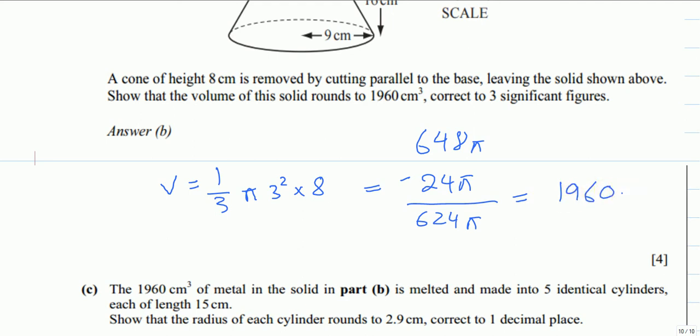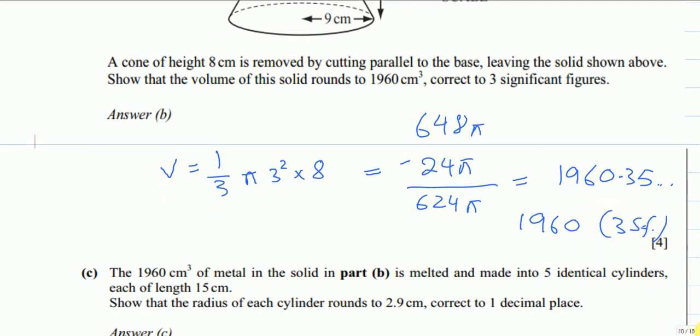624π equals 1960.35 and so on, which rounds to 1960 to three significant figures. Now let's look at part c.